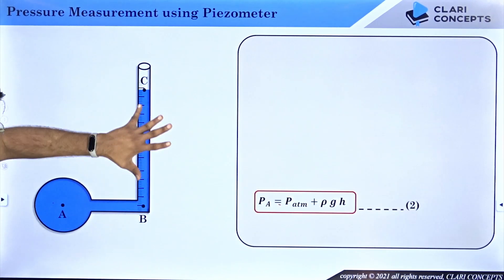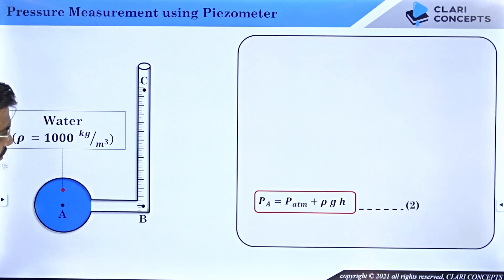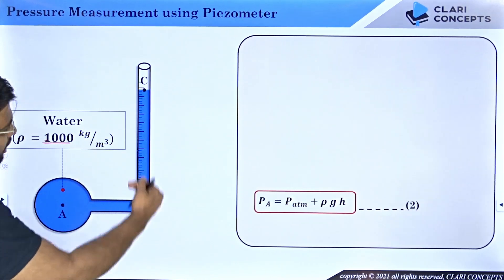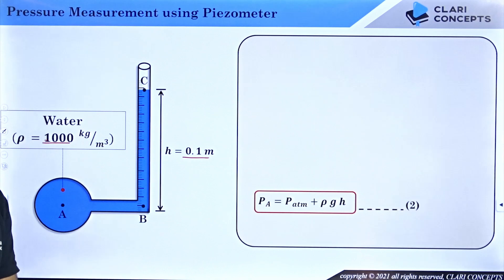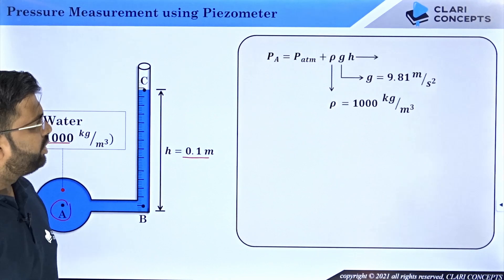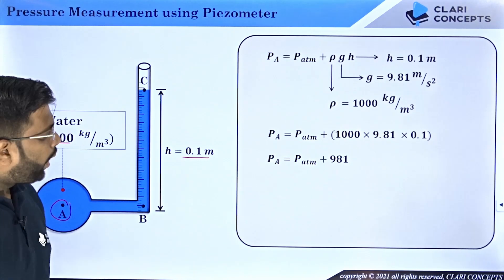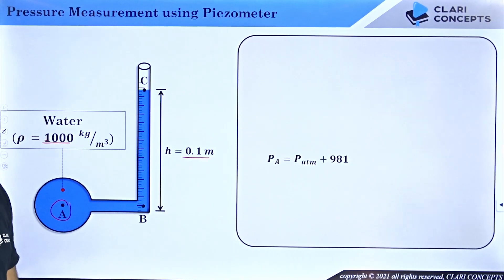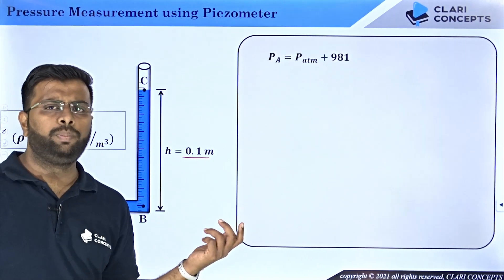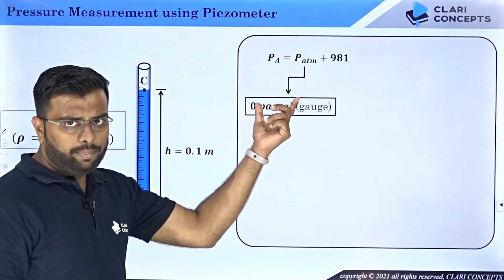The pressure at point A is P_atm + ρgh. Let me take an example where water is flowing through the pipe — density of water is 1000 kg/m³ and the water level has risen to a height of 0.1 meters. Using the equation: P_A = P_atm + ρgh = P_atm + (1000)(9.81)(0.1) = P_atm + 981 Pa. Now there are two ways to substitute the atmospheric pressure value: you can use zero pascal (gauge pressure reference) or 101325 pascal (absolute pressure reference).